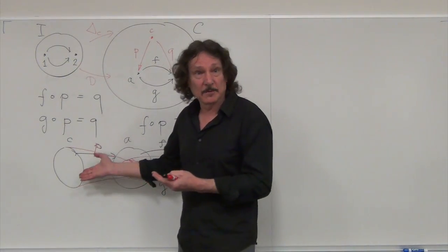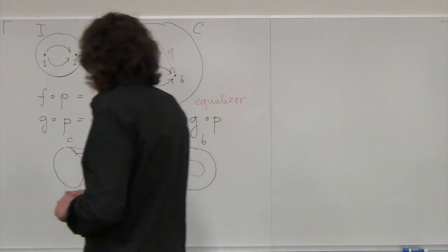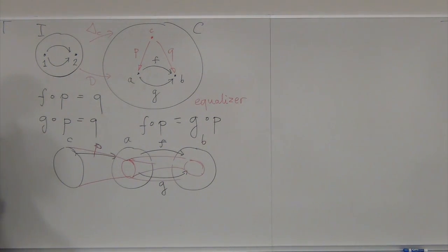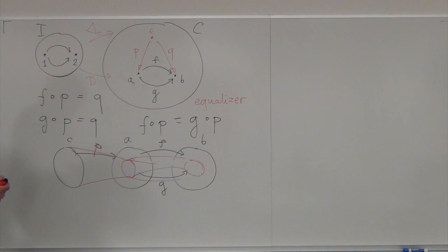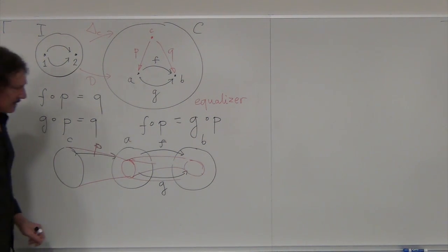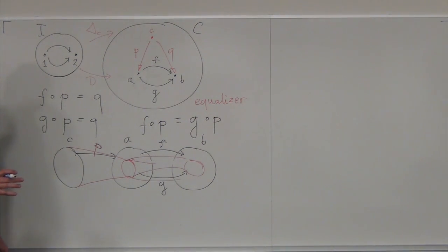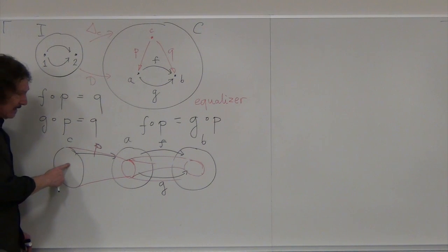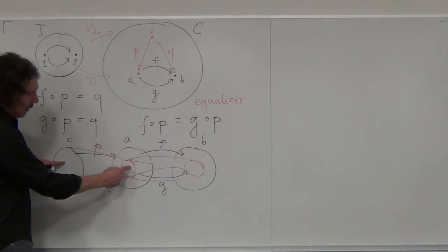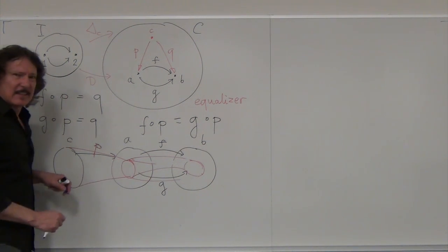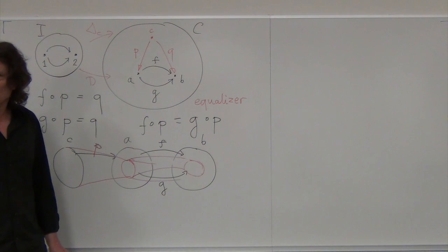That's a way of solving an equation except it does it in a category, so we can forget about sets — we have the equation in a much more general setting. When you do the universal construction, the best possible C and P will be the ones that pick exactly the right subset. It's the Goldilocks principle — not too big, not too small. It only includes the points on which F and G are equal.